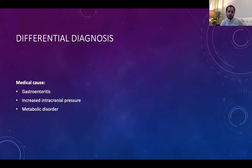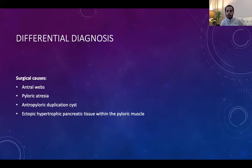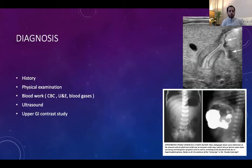The differential diagnosis includes medical causes such as gastroenteritis, GERD, increased intracranial pressure, and other metabolic disorders; and surgical causes such as antral web, pyloric atresia, antropyloric duplication cysts, and ectopic hypertrophic pancreatic tissue in the pyloric area.